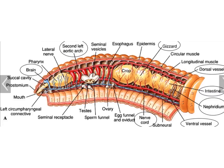With a quick review: we have our mouth, which goes into the pharynx, followed by the esophagus, the crop, the gizzard, and finally the intestines. We can see each of the various segments, the reproductive structures of the seminal vesicles with the testes, the seminal receptacles, the ovaries, the five hearts, and the dorsal and ventral blood vessels.